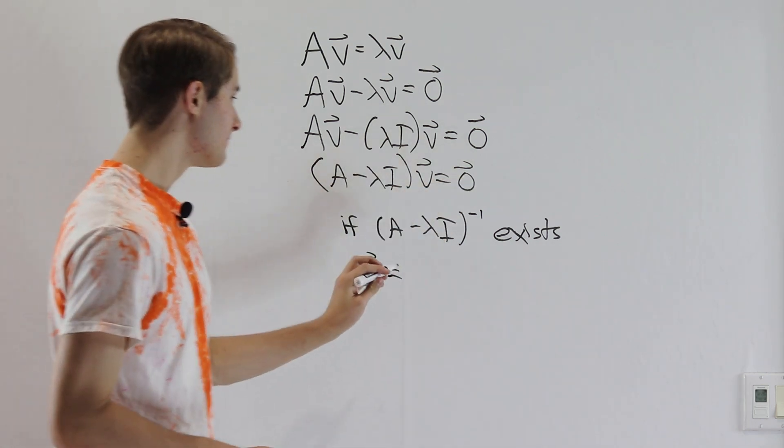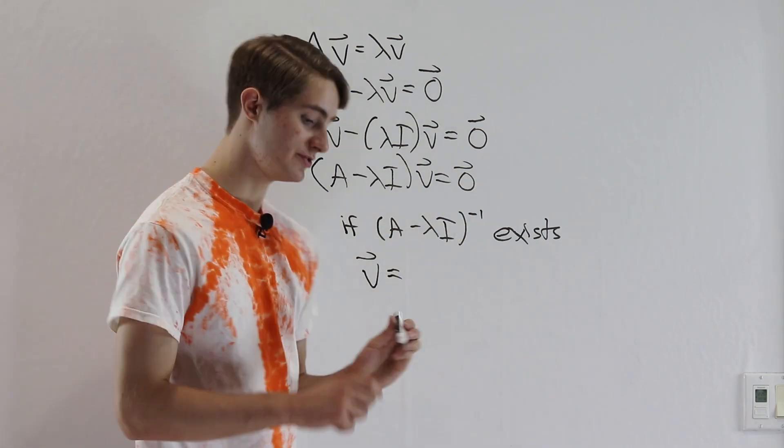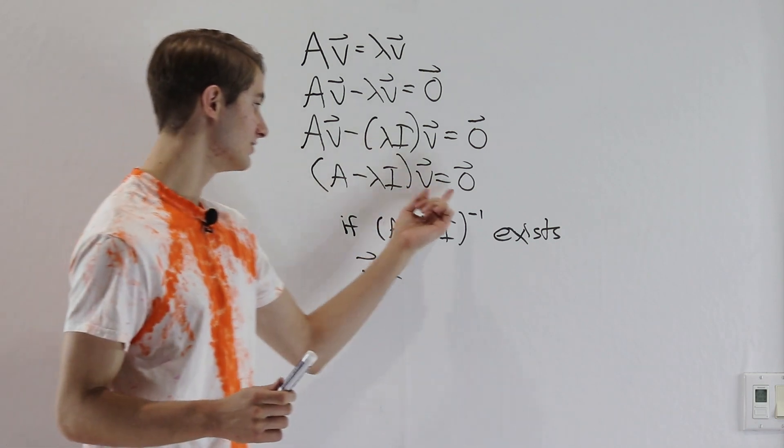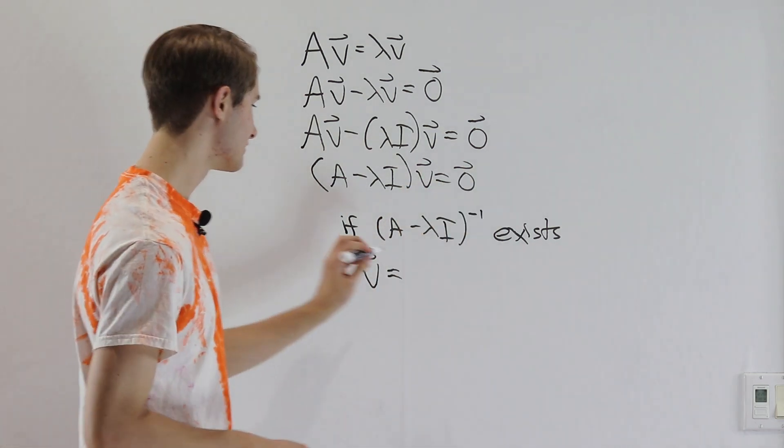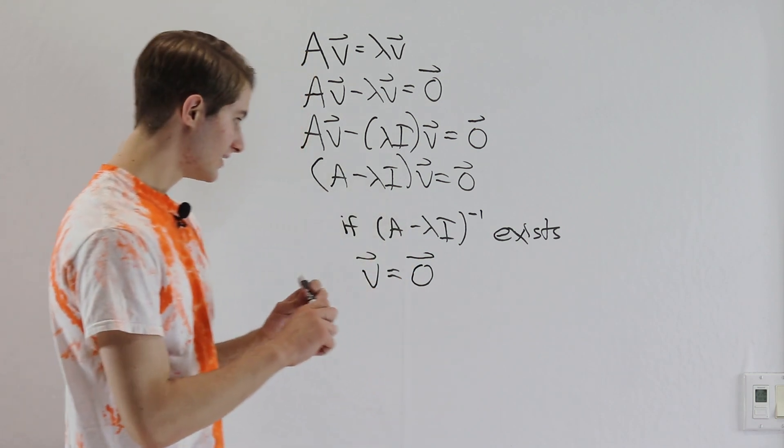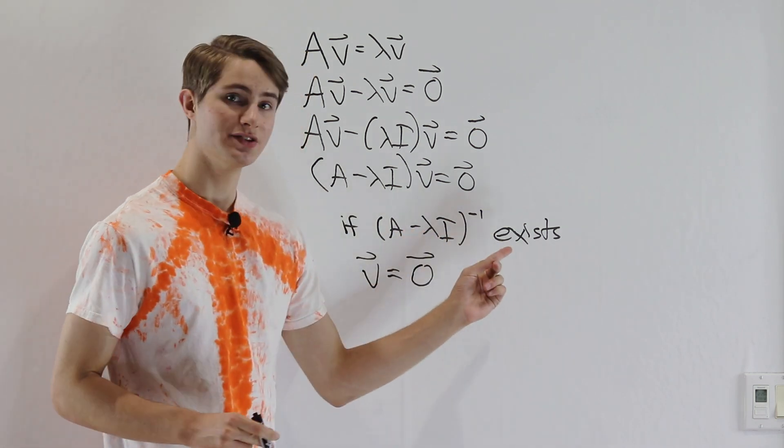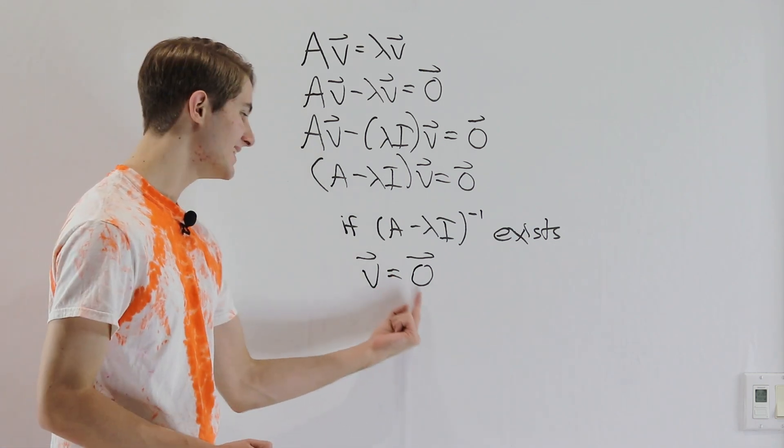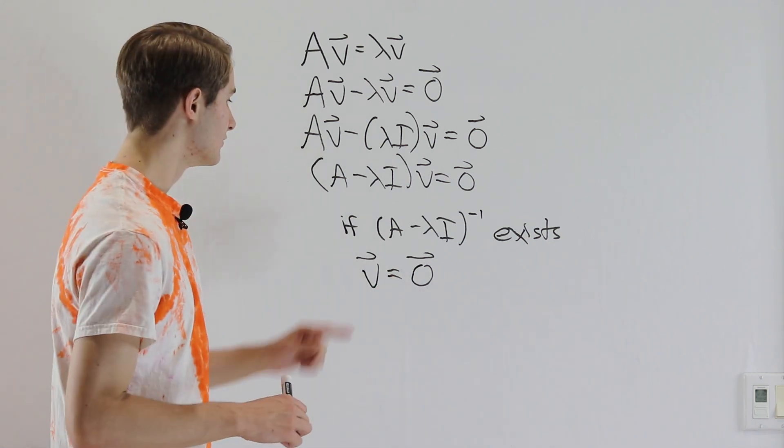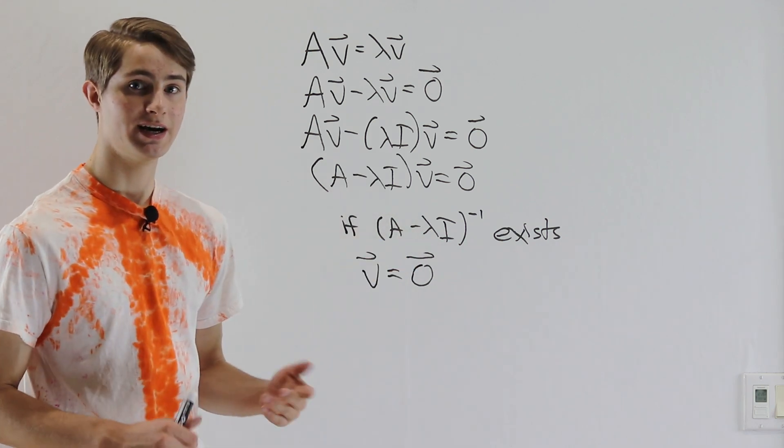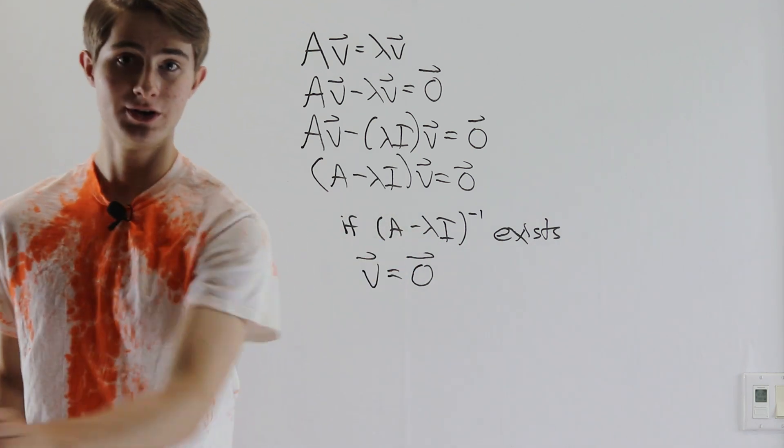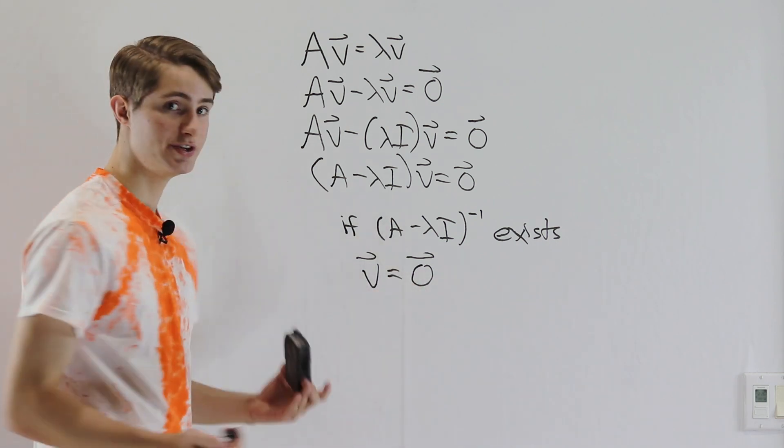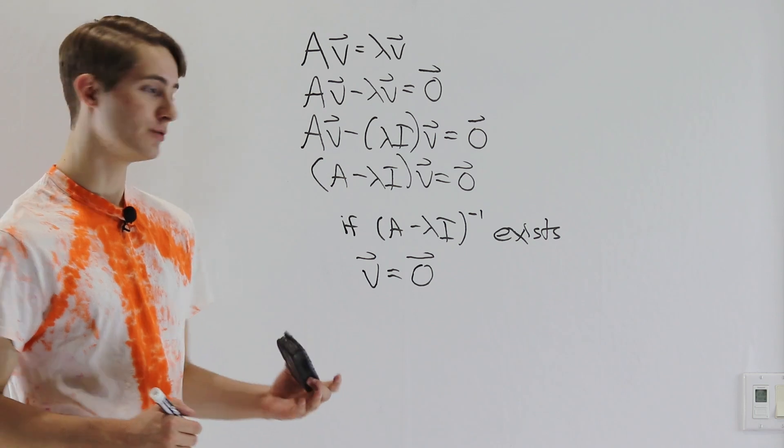But on the other side, we would get A minus lambda I inverse times 0. But remember, this is just a matrix, and any matrix times the 0 vector is just going to get us the 0 vector back out. So if A minus lambda I inverse exists, we can multiply it on both sides and get that the only solution for V is the 0 vector. So we cannot have that A minus lambda I is invertible, because if it's invertible, we don't get more than one solution. And we need more than one solution to get something other than the 0 vector, since the 0 vector is always a solution.